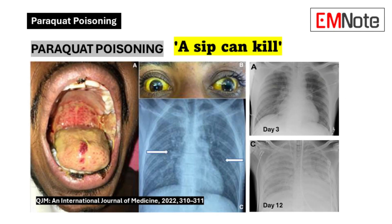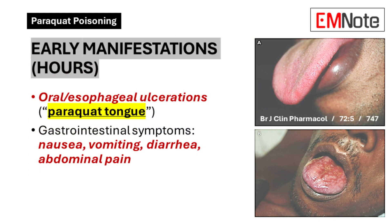Clinical manifestations. The temporal progression of paraquat toxicity typically manifests in two distinct phases. In the early phase, occurring within hours of exposure, patients predominantly exhibit local corrosive effects, including characteristic oral and esophageal ulcerations, colloquially termed paraquat tongue, accompanied by prominent gastrointestinal symptomatology including vomiting, diarrhea, and abdominal pain.